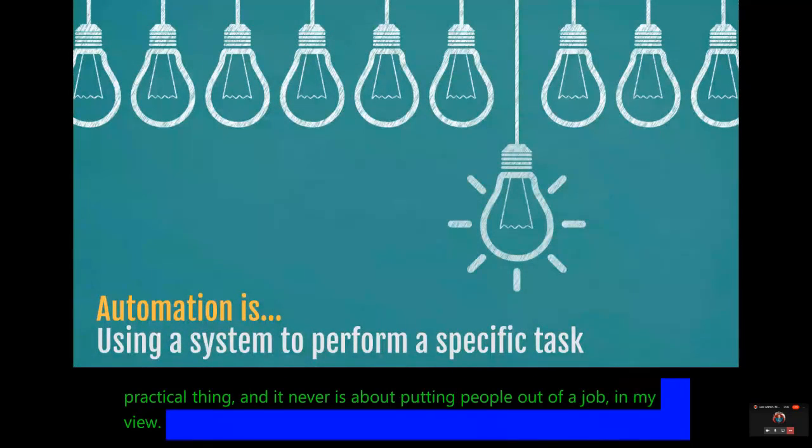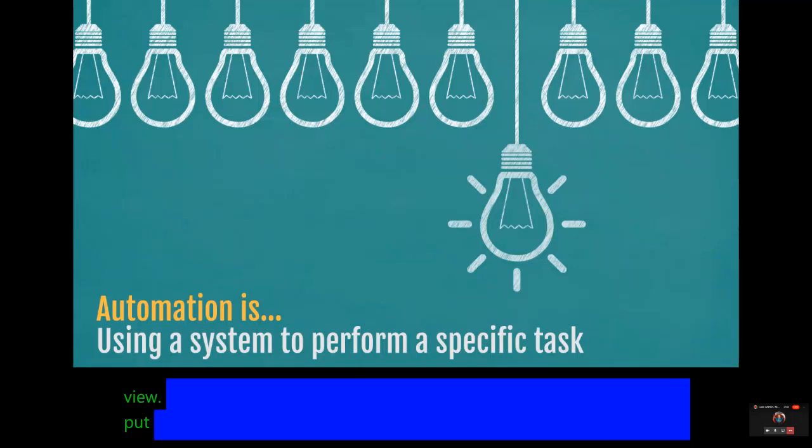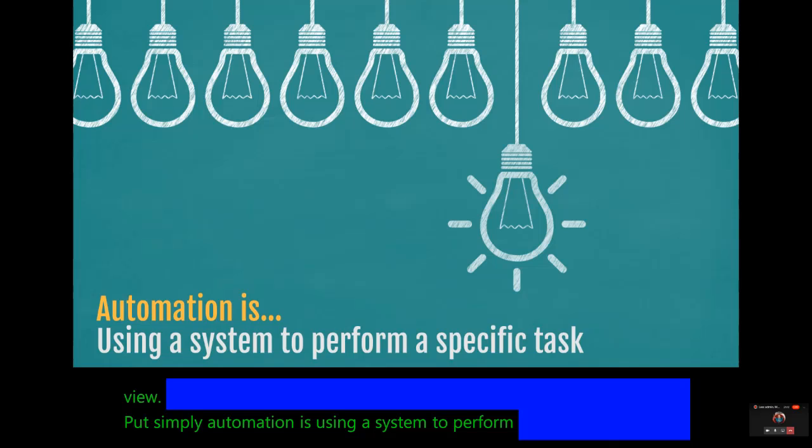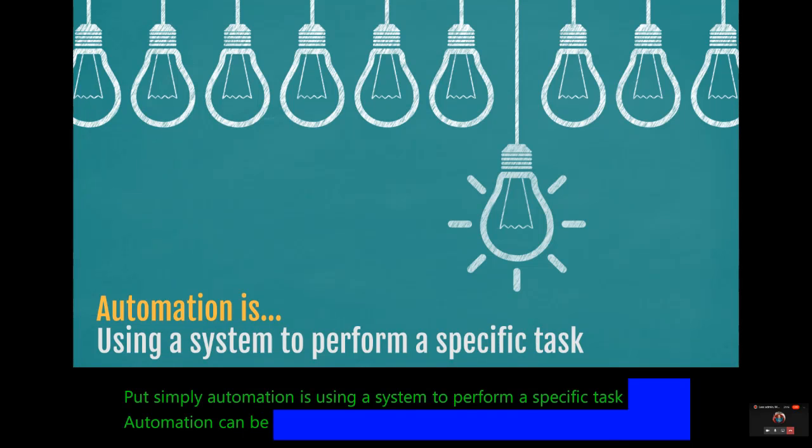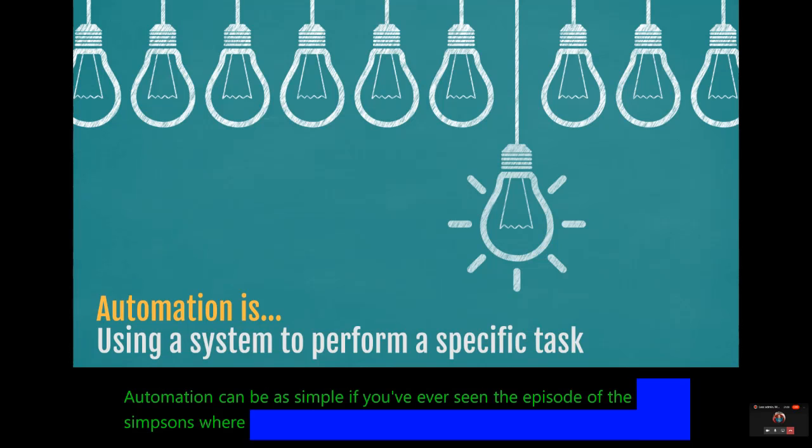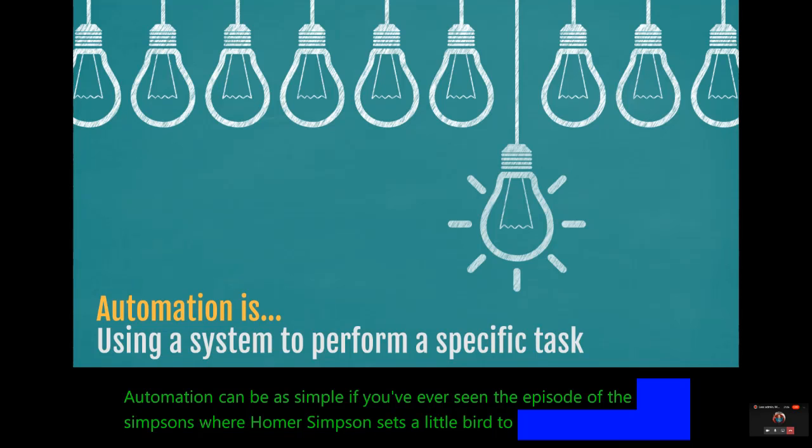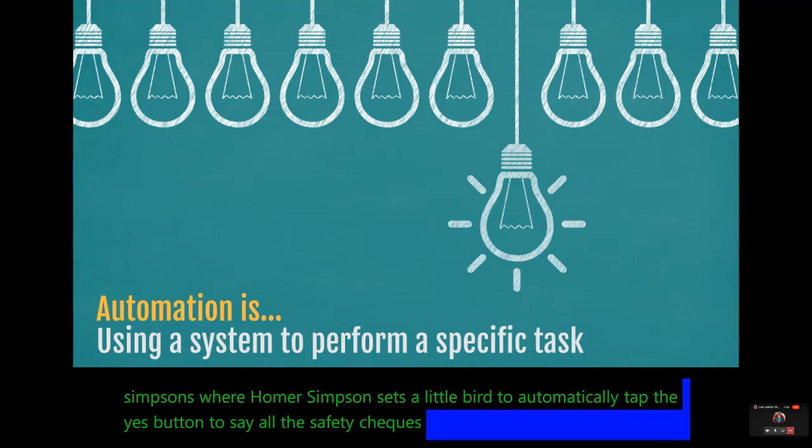Put simply, automation is using a system to perform a specific task. Automation can be as simple as if you've ever seen the episode of the Simpsons where Homer Simpson sets a little bird to automatically tap the yes button to say all the safety checks are passed.